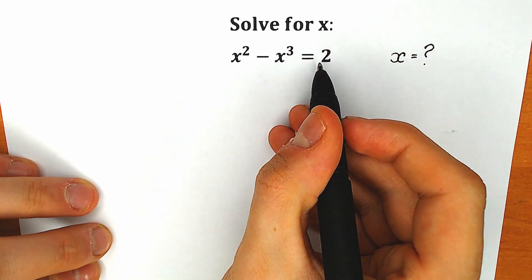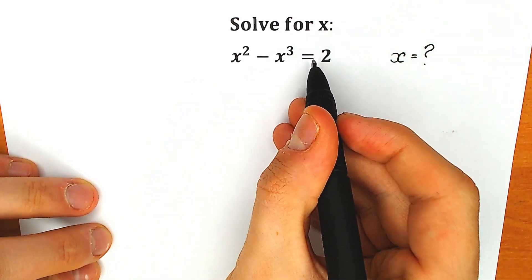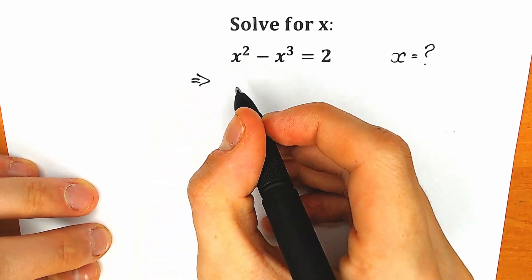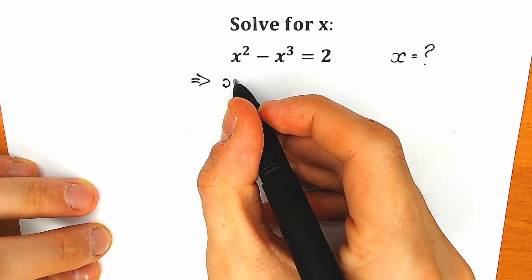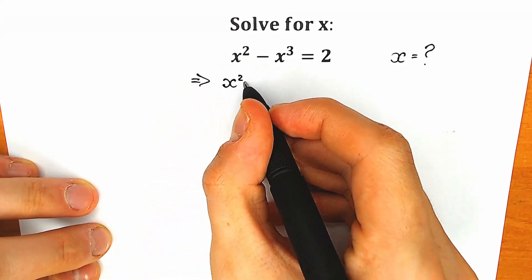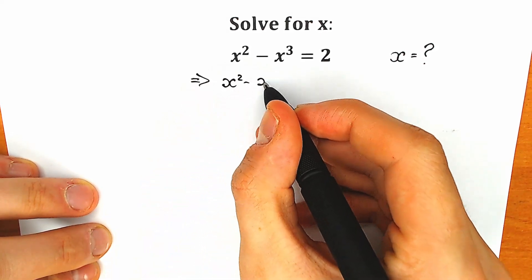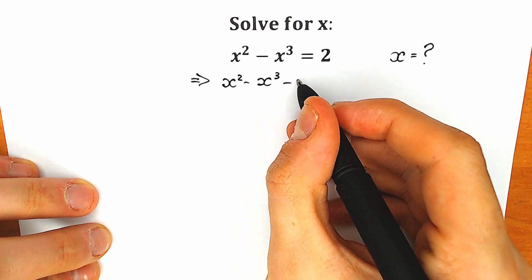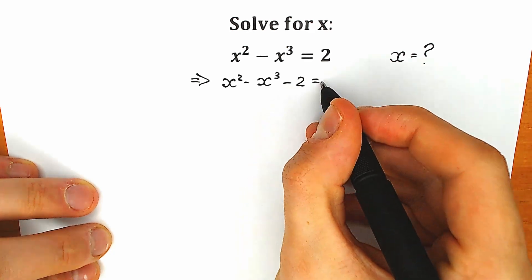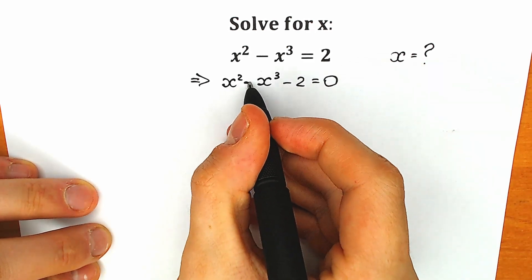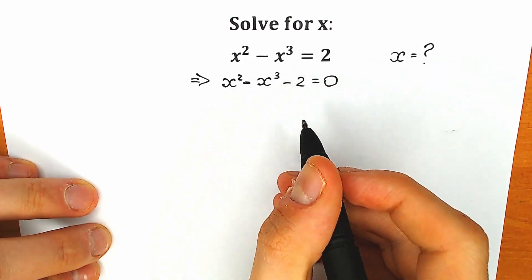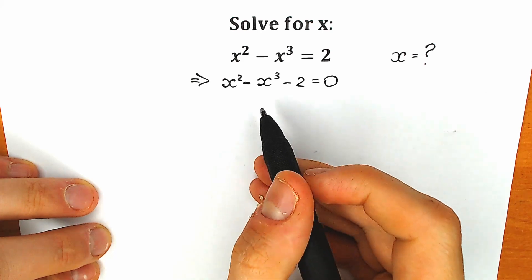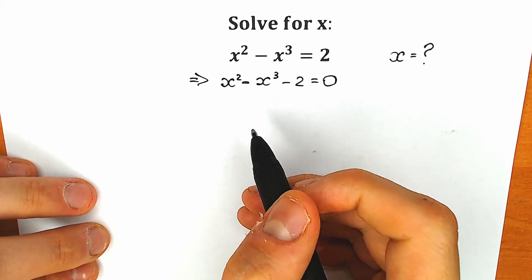First of all, let's write this 2 on the left side with the negative sign. So as a result we have x squared minus x cubed minus 2 equals 0. This is our first step — we just moved it to the left side with the negative sign.